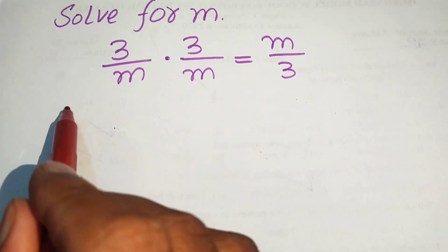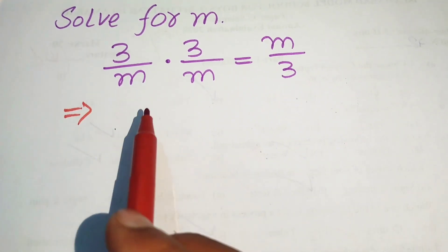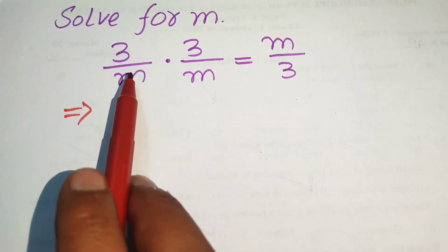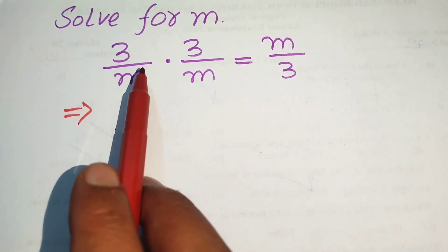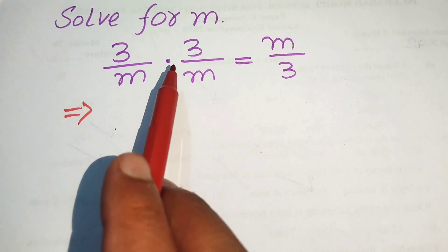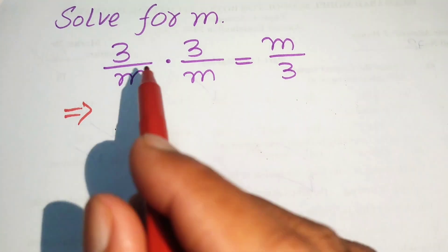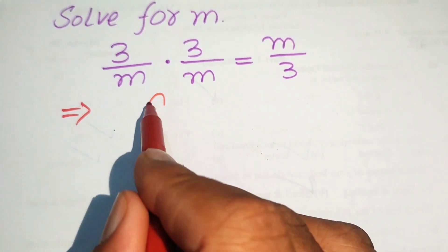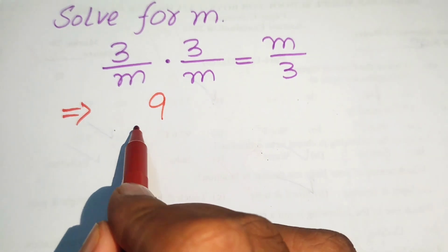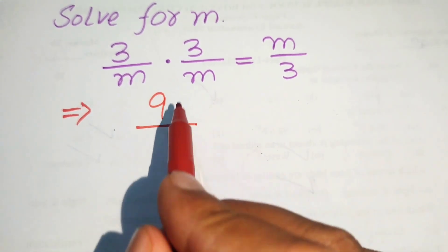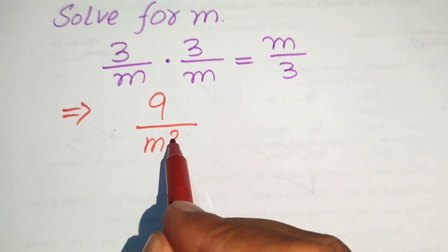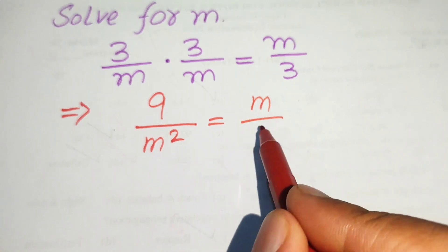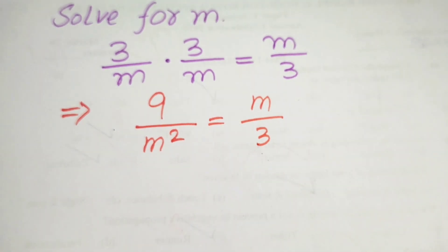The very first step we are going to do is multiply these two terms — we multiply the numerator by numerator and denominator by denominator. So, we know that 3 times 3 becomes 9 and m times m becomes m squared, equals to m over 3.